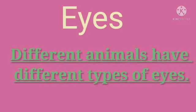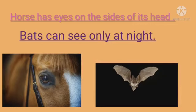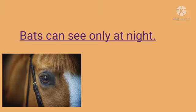Now we come to the topic of eyes. As human beings have eyes of different shapes, sizes and colors, different animals also have different types of eyes. As you can see in the picture, the horse has eyes on the sides of its head and therefore its vision is split. You can also see the picture of a bat — bats, as we all know, can see only at night as they are blind during the day.